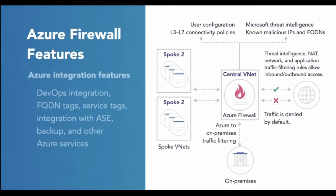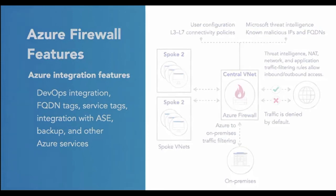There are a number of integration features that are interesting, and FQDN tags are one to look at. FQDN tags make it easy for you to allow well-known Azure network traffic through your firewall — for example, if you want network traffic from Windows Update to flow through your firewall, FQDN tags are one way to accomplish that.